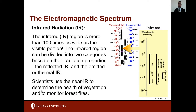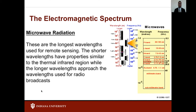Infrared images obtained by sensors in satellites and airplanes can yield important information on the health of crops and can help determine forest fires when they are masked by a curtain of smoke. Microwave wavelengths range from approximately one millimeter, which is the thickness of a pencil lead, to 30 centimeters.